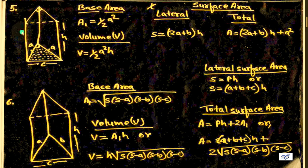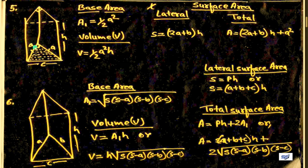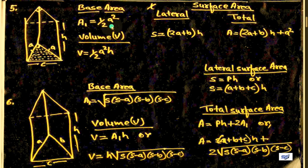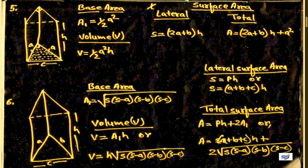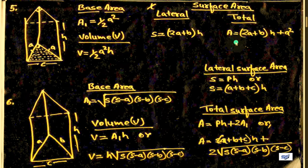In figure 5 we have a prism and we find base area, volume, lateral surface area, and total surface area using certain formulas. Base area: A = half a squared. Volume: V = half a squared into S. Lateral surface area: S = (2a plus b) into H. Total surface area: A = (2a plus b) into H plus a squared. Using all these formulas we will find the requirements related to the prism.